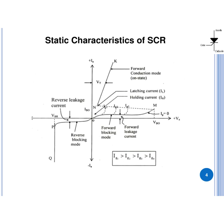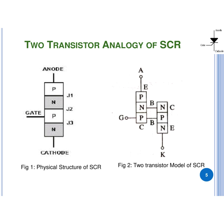Now moving to the next topic: the two-transistor analogy of SCR. This is the physical structure of SCR shown in figure number 1. It consists of 4 layers of alternate P-N silicon semiconductor material which we discussed in the first lecture. If we connect the upper 3 layers as PNP, and similarly the lower 3 layers as NPN, as shown in figure number 2, we get the 2-transistor model of SCR.